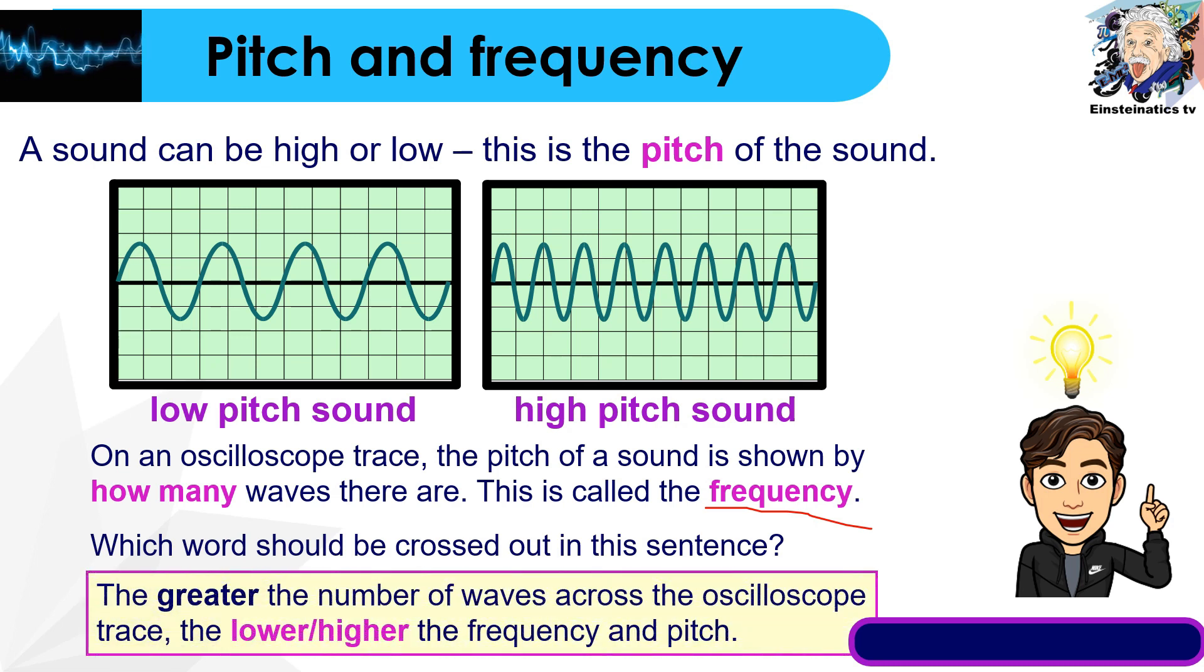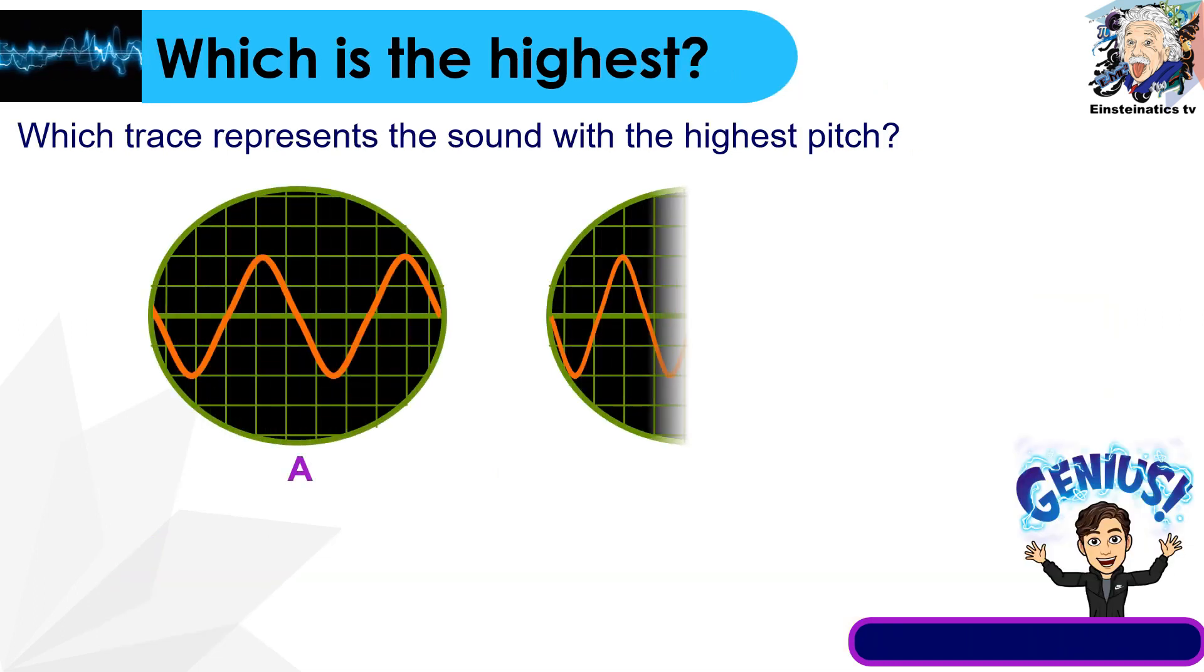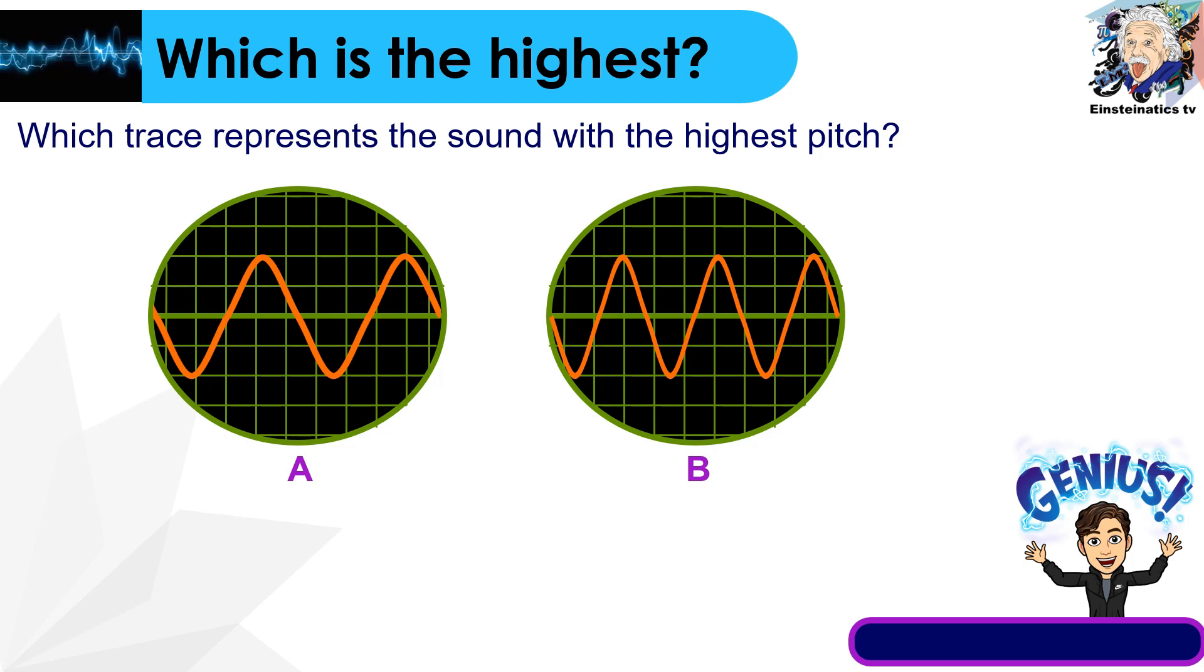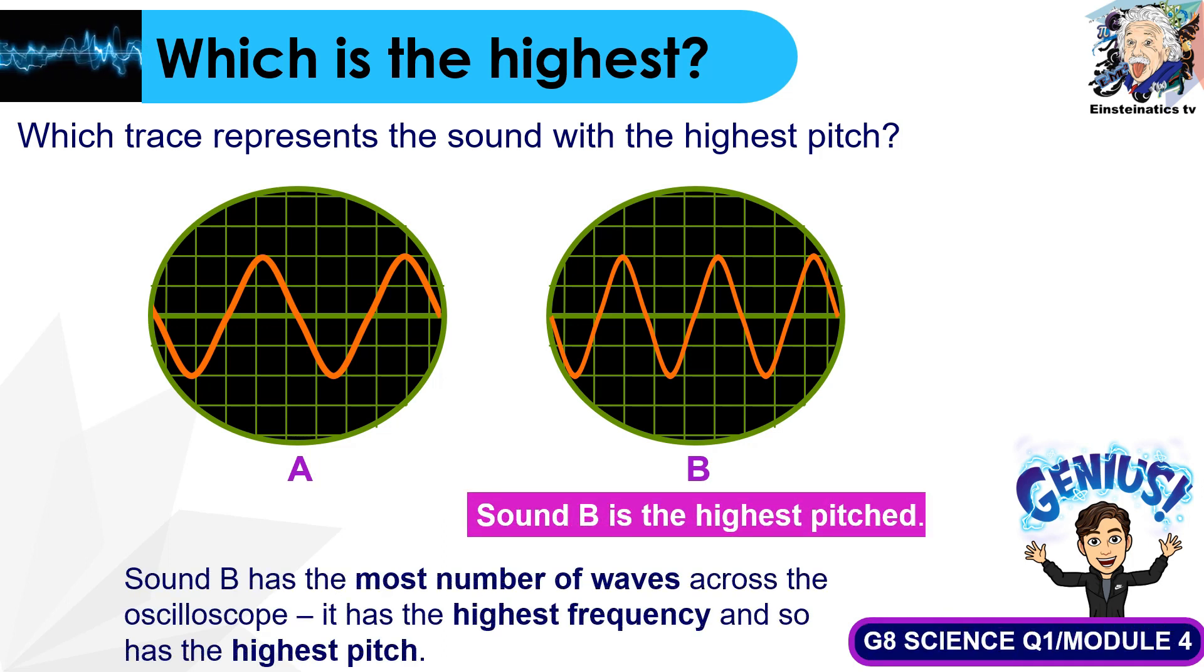Which word should be crossed out in this sentence? The greater the number of waves across the oscilloscope, lower or higher frequency and pitch? The correct answer is it is much higher. The more waves that pass through one point, the higher pitch the sound. Which do you think is the highest pitch, A or B? The highest pitch would be B, because it has the most number of waves across the oscilloscope, so it has the highest frequency and highest pitch.